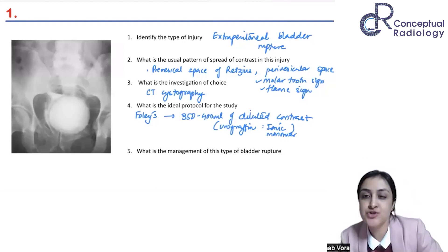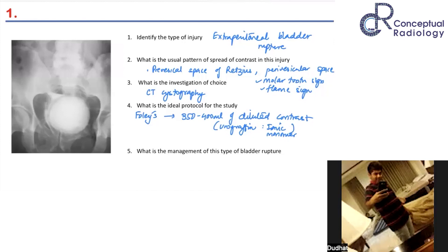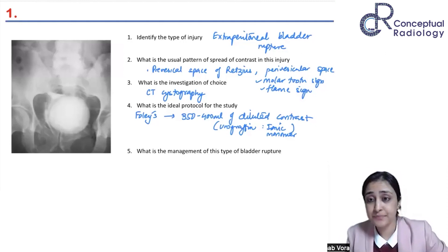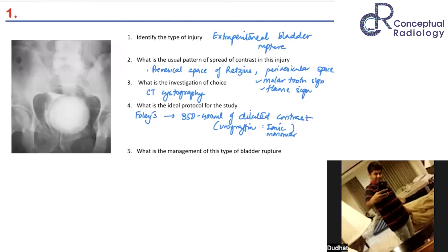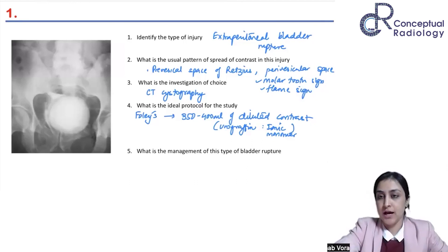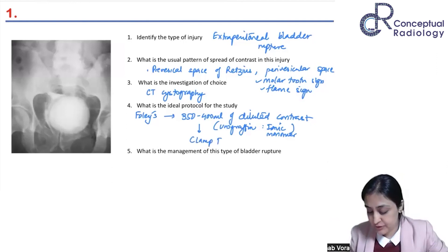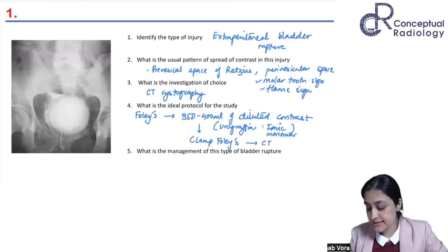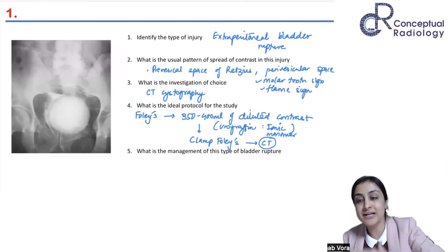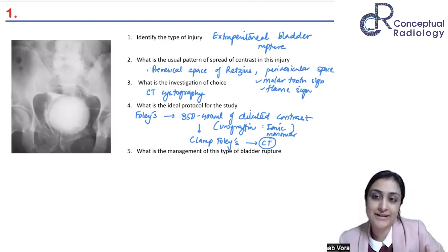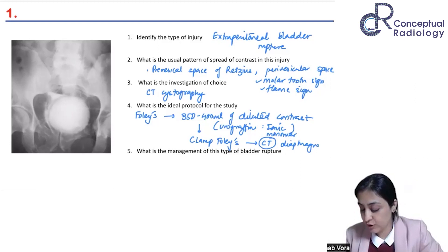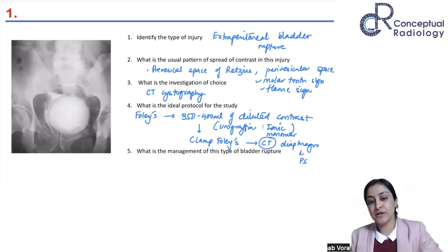You dilute urographin with normal saline. Next — do you remove the Foley? In a trauma setting, no. We clamp the Foley so the contrast does not drain out. Then you take a CT scan. You've already done a venous phase CT abdomen or torso, so you don't want to rescan everything. You now take a limited CT scan from the diaphragm to the pubic symphysis. That is the CT cystography protocol.